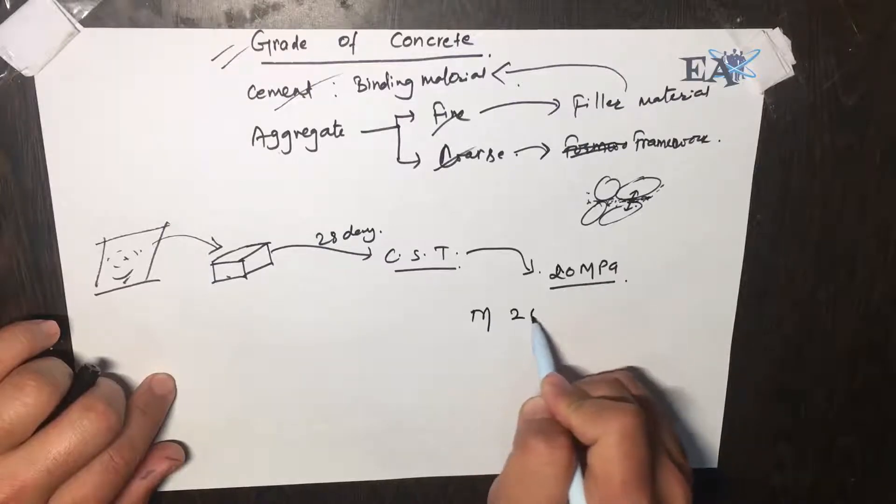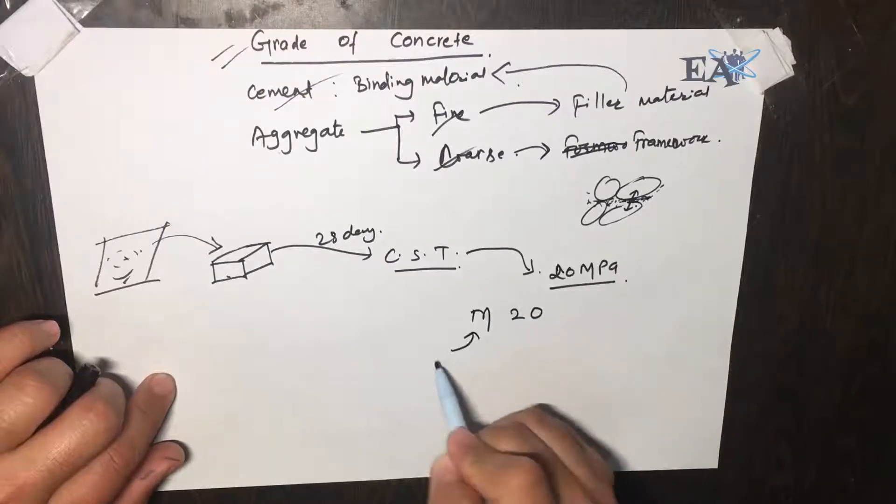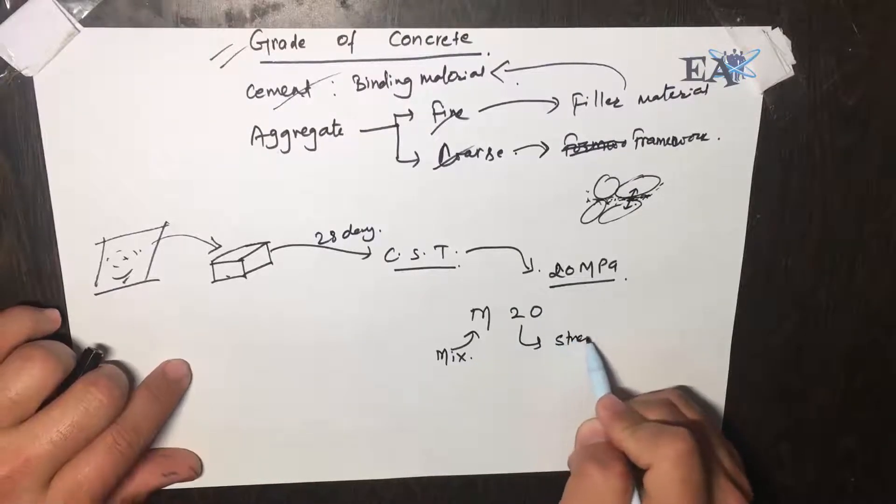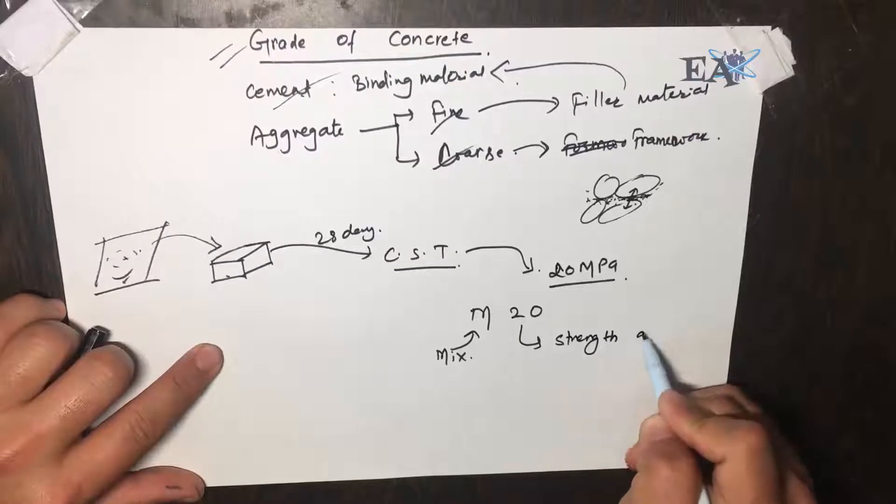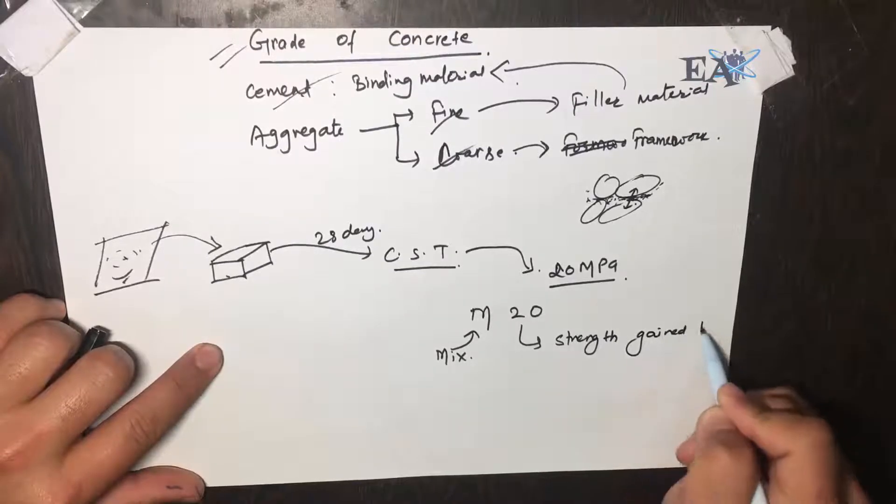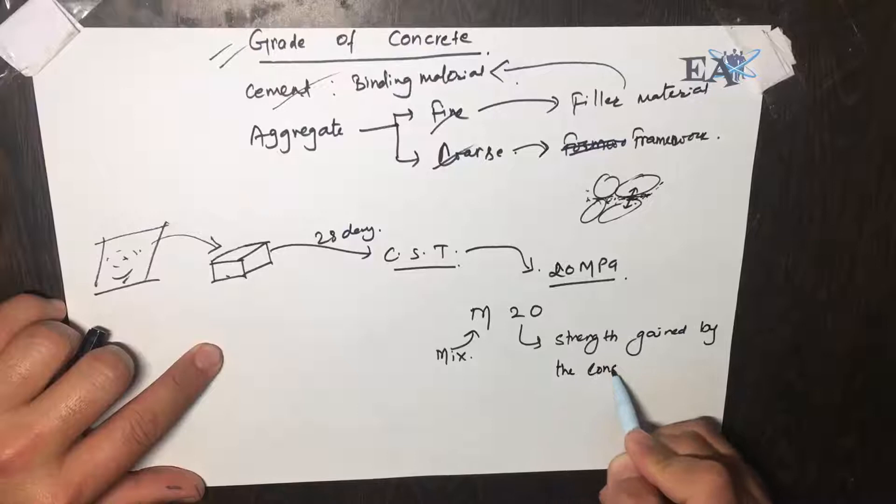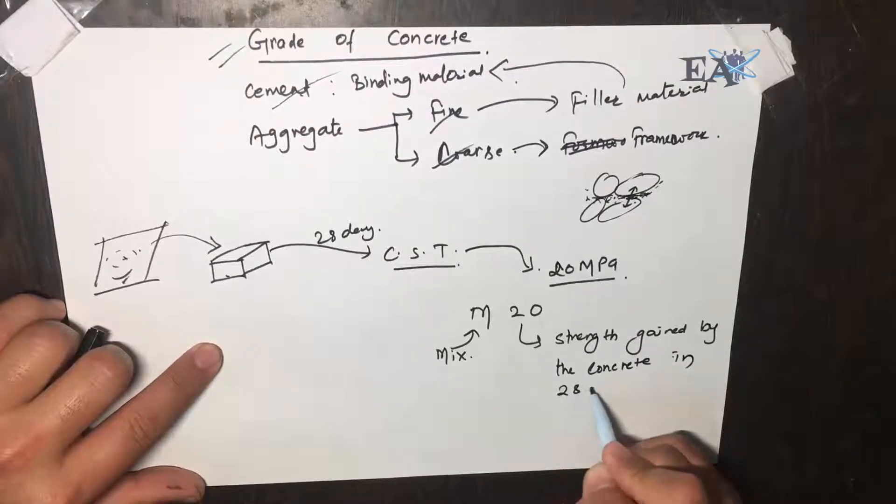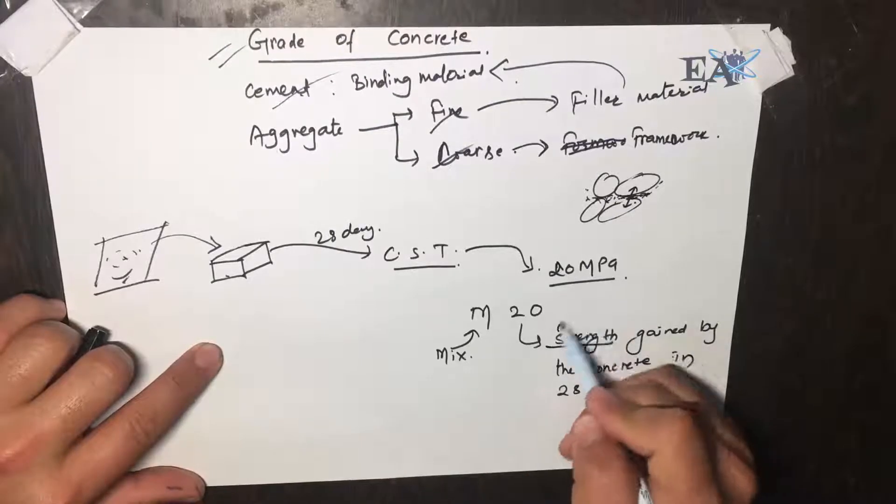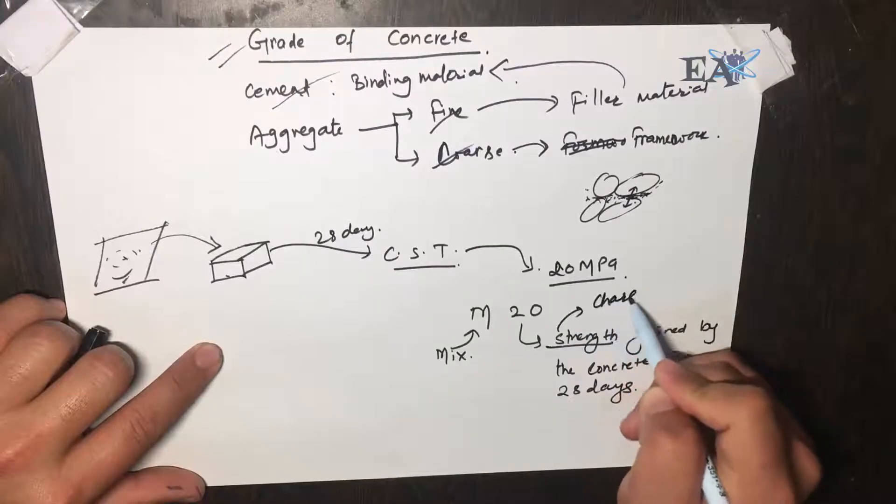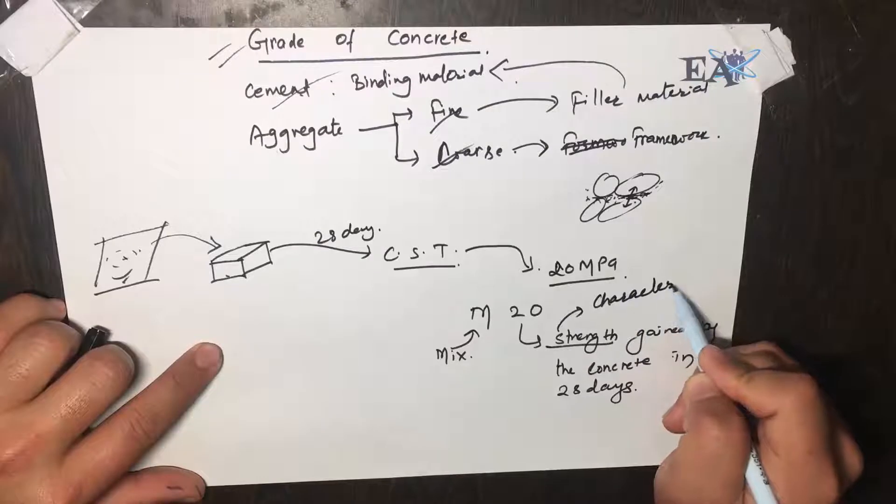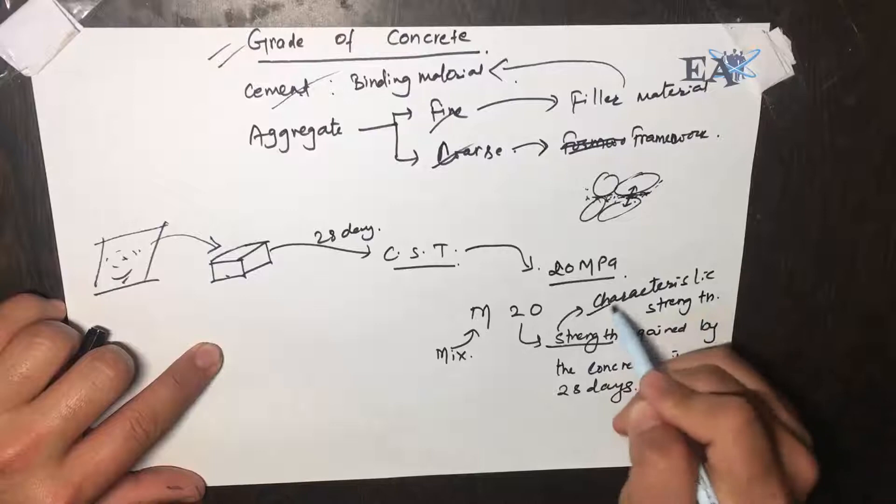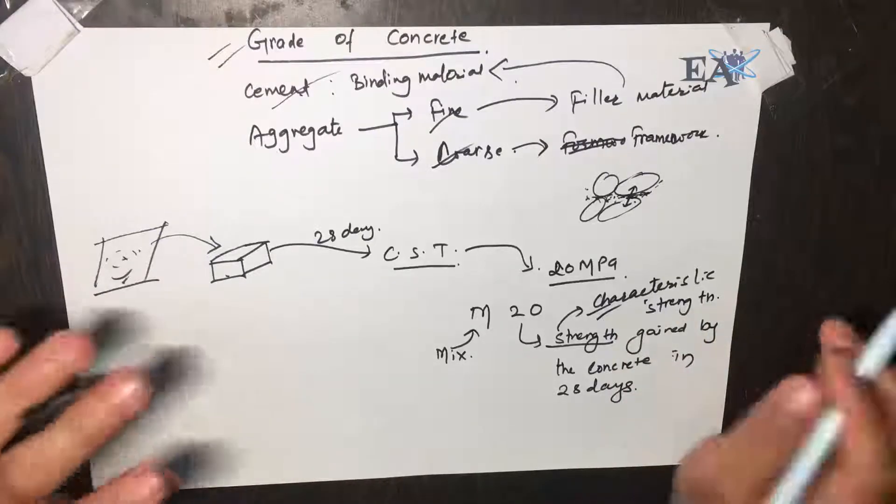Here M literally stands for the mix and 20 refers to the strength gained by the concrete in 28 days. So strength here is the characteristic strength. If you don't know what that is, see the description below.